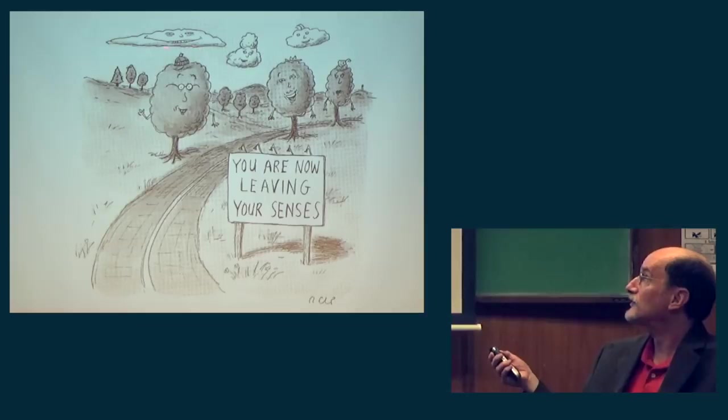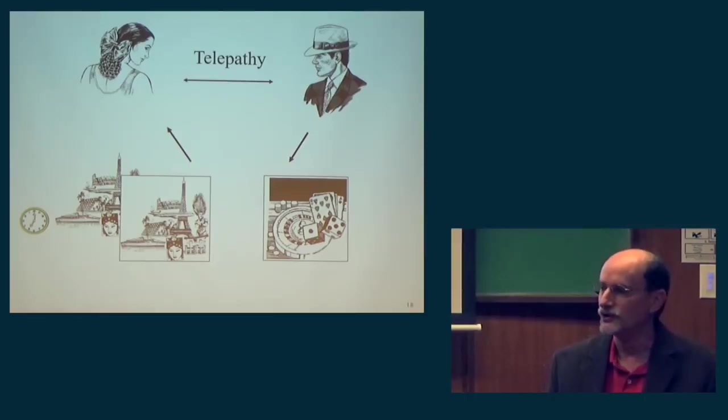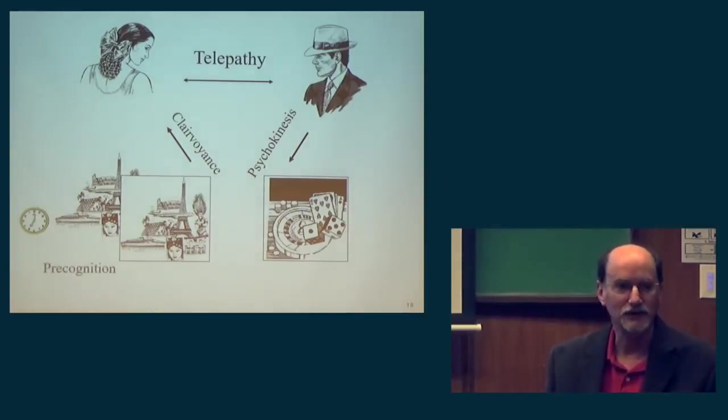So what we do in the laboratory, and what has been done by colleagues around the world for about 150 years, is to study some subclasses of these kinds of experiences because they are amenable to laboratory tests. If information passes between people who are isolated or shielded, we label that telepathy. If a person's intention is impressed into the world, we call it psychokinesis. If you get information from the world without ordinary senses, it's clairvoyance, and if it's slipped in time, it's precognition or retrocognition.